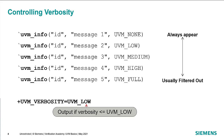Typically we use UVM_LOW for regular messages, and if you want to run with nothing, you can use UVM_NONE on the command line and no messages will be printed out. Errors, warnings, and fatals can't be filtered out in this way.